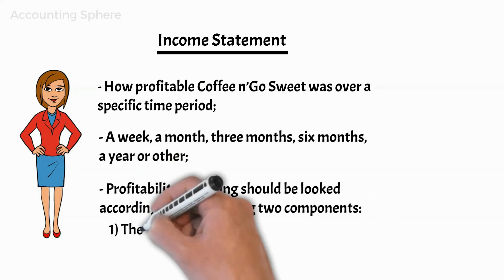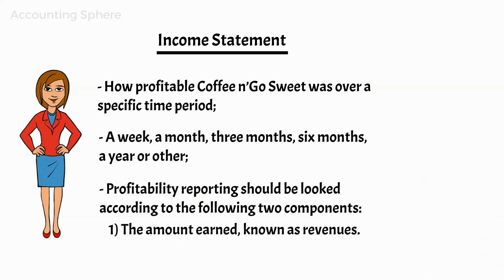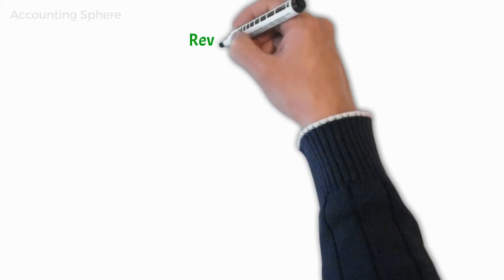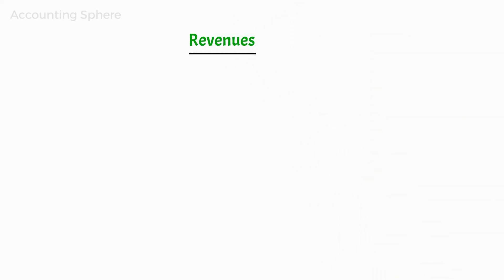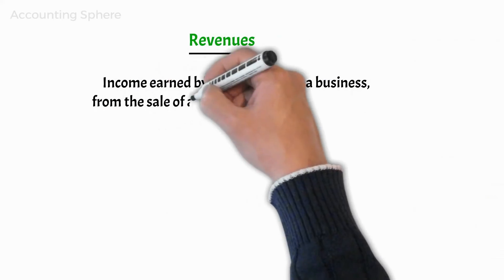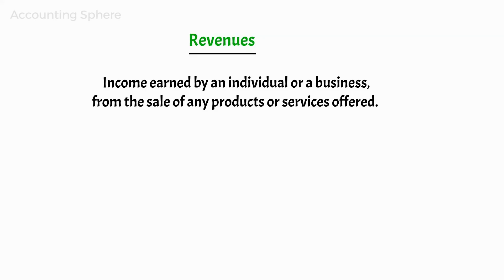One: the amount earned, known as revenues. Coffee & Go Sweet's major source of income are the fees it charges for the coffees sold. These fees are the revenues of the business. Revenue is the income earned by an individual or a business from the sale of any products or services offered.